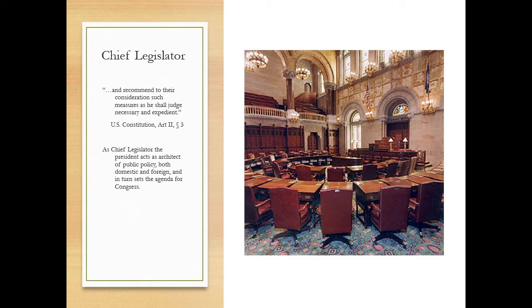The Defense Department alone has over 200 staff members assigned as congressional liaisons. The Department of Defense is part of the executive branch, so in effect you're talking about the President, through the Department of Defense, having over 200 staff members lobbying Congress. By at least one estimate, the executive branch has as many as 1,500 employees assigned to lobby Congress. Both the White House and the OMB staff act to coordinate departmental liaison activities.